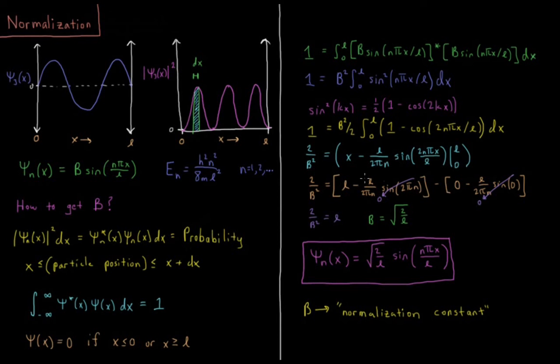So the only thing that actually doesn't come out as 0 in this entire integral is the value of x at x equals L. So we get 2 over b squared equals L, and when we arrange this, we get b equals the square root of 2 over L.